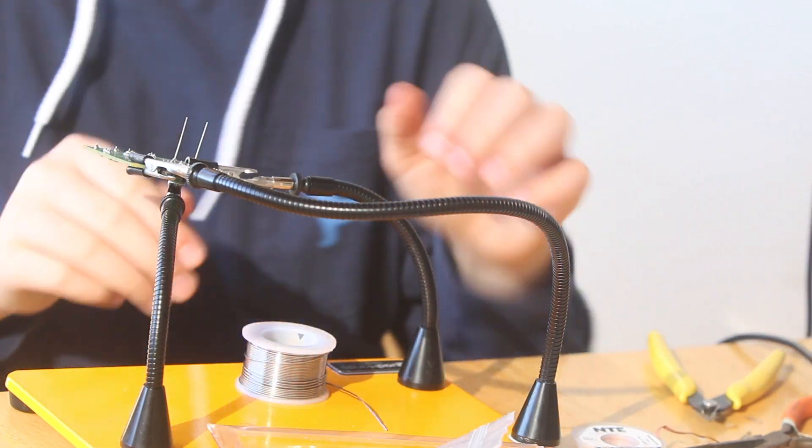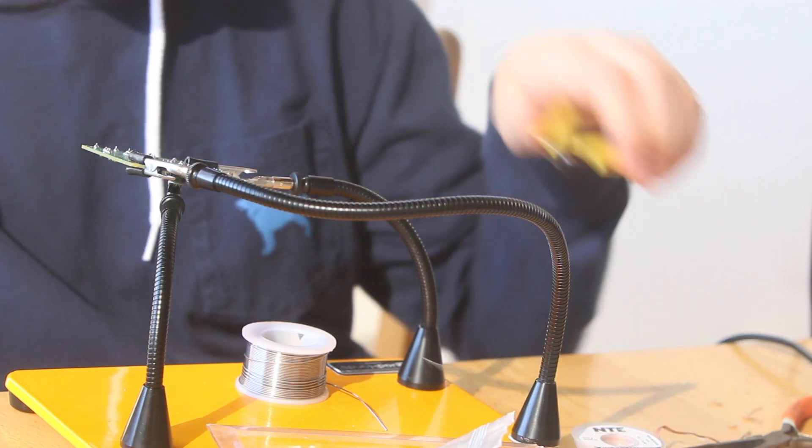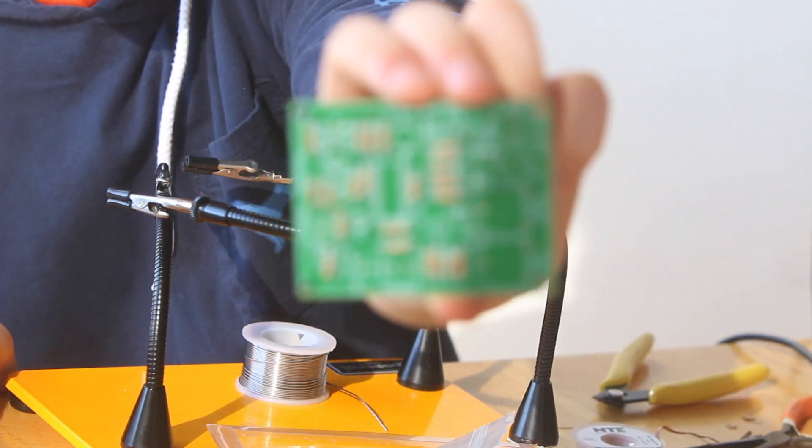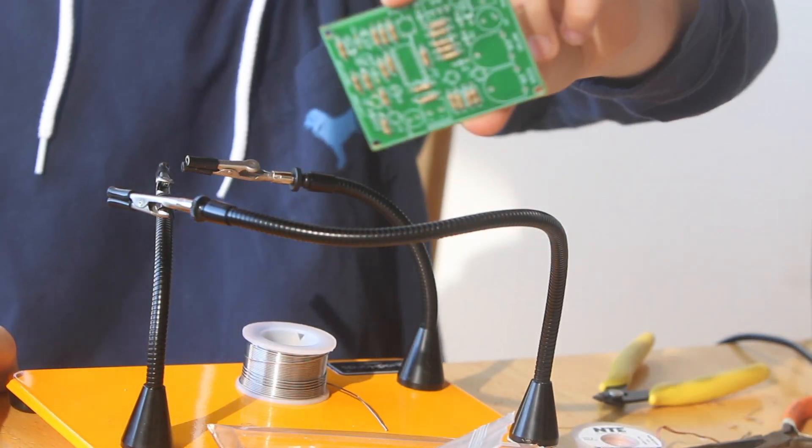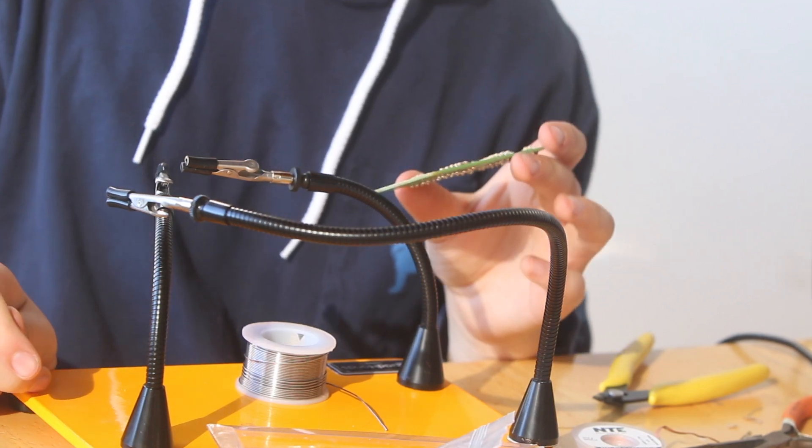And that concludes the resistor section, if you don't count clipping off these little ends. So, 22 resistors, and yep, there we go. Now we're moving on to diodes.